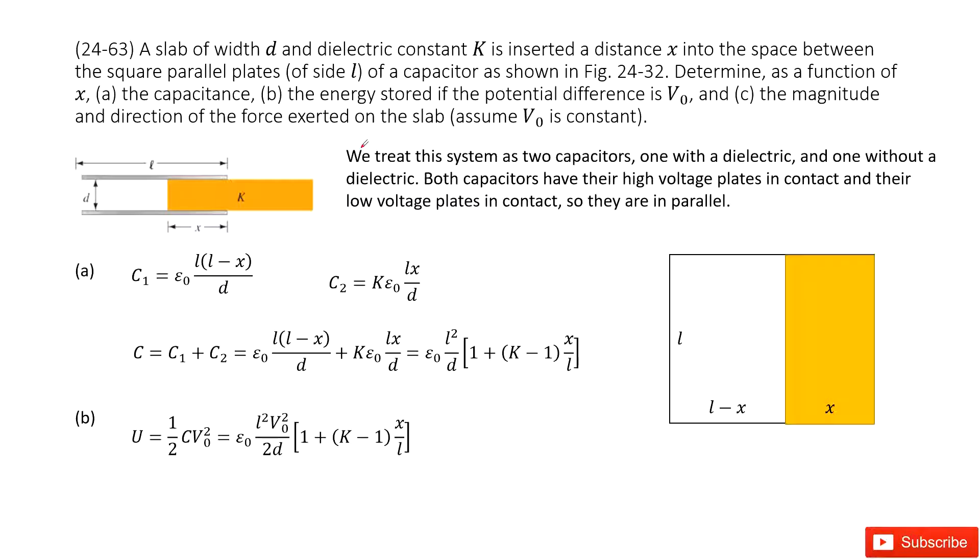So there you can see we have this system. This is a capacitor. The distance is d and now we have a dielectric with constant k inserted a distance x, this one. And now we need to determine the equivalent capacitance.